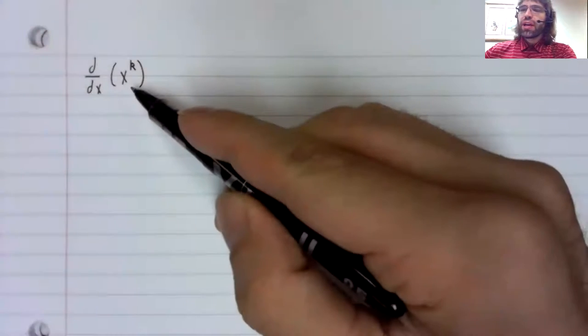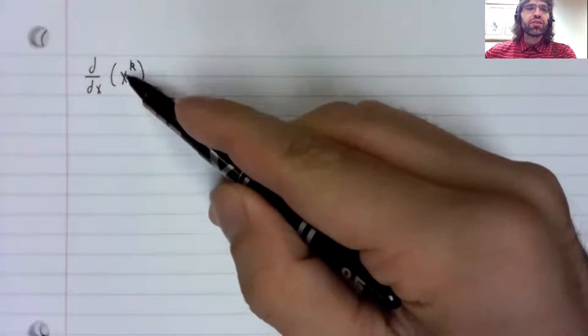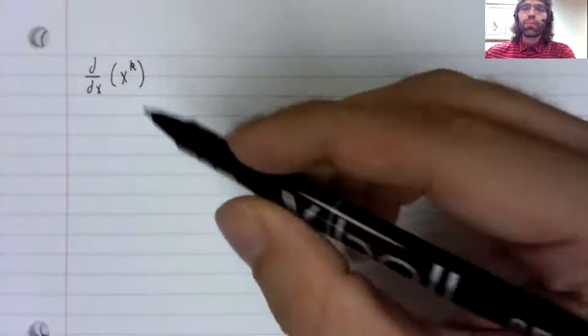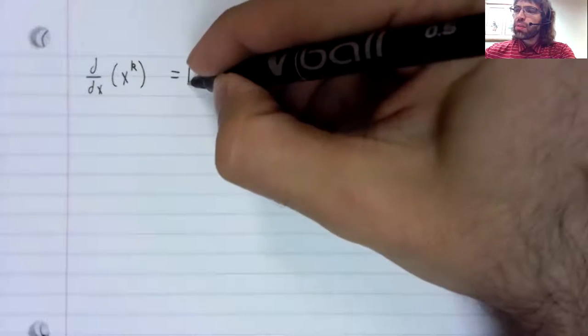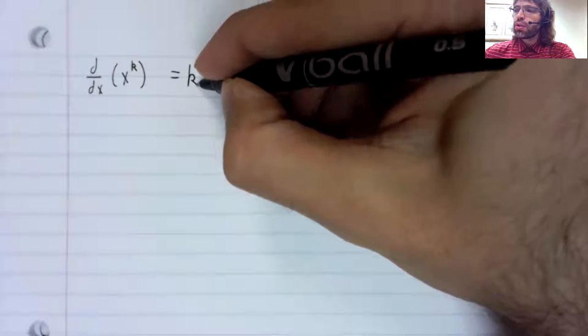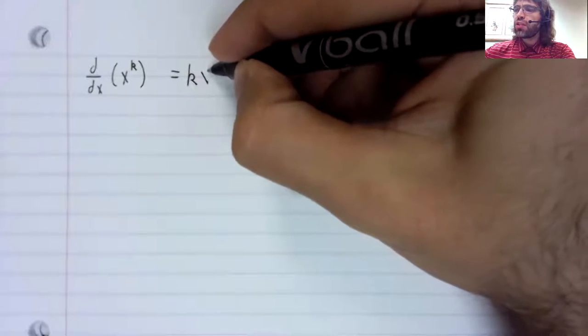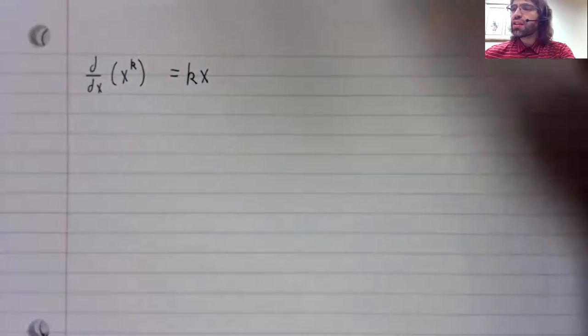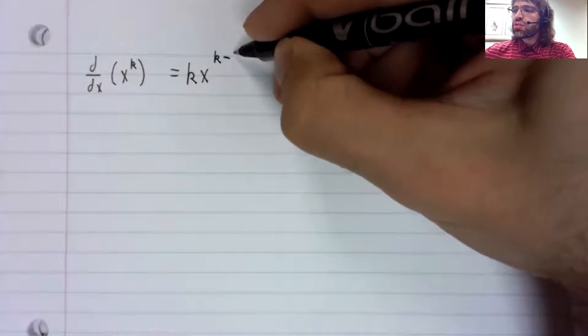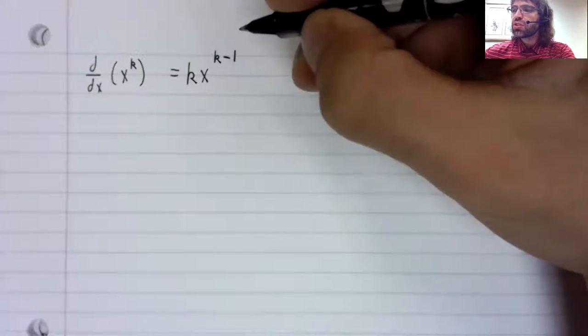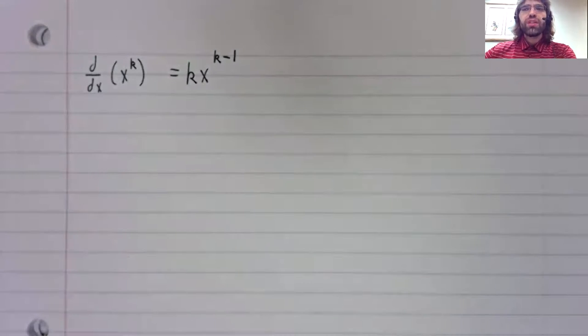When you have the derivative of x raised to a power, that brings the power down in front of the x, and then in the exponent, we subtract 1.